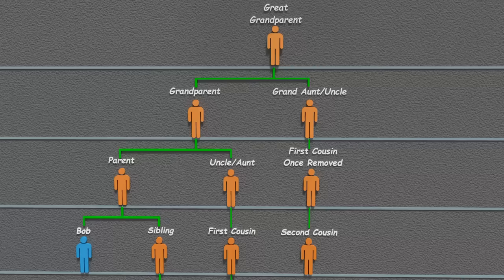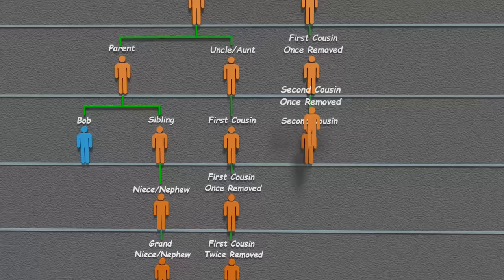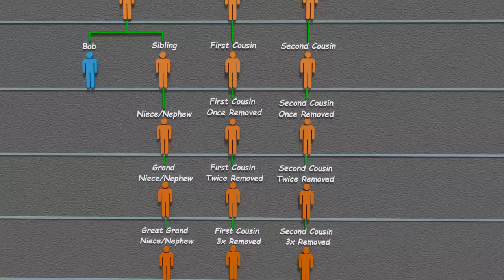And down one more level, here is Bob's second cousin. Notice that second cousins share the same great-grandparent. Just as we did with Bob's first cousin, this is Bob's second cousin once removed, second cousin twice removed, and so on.